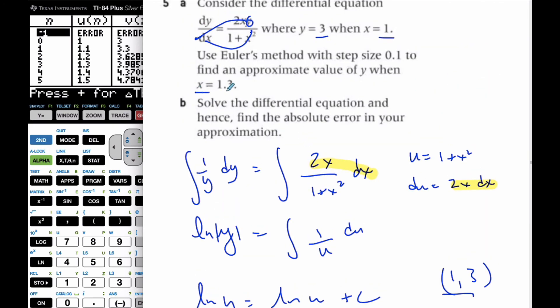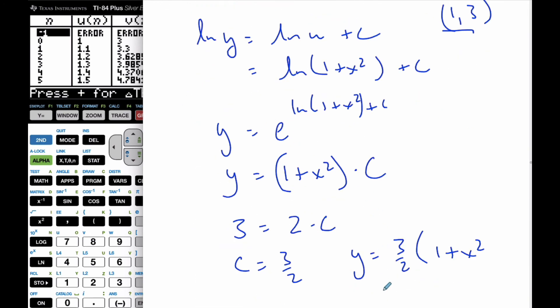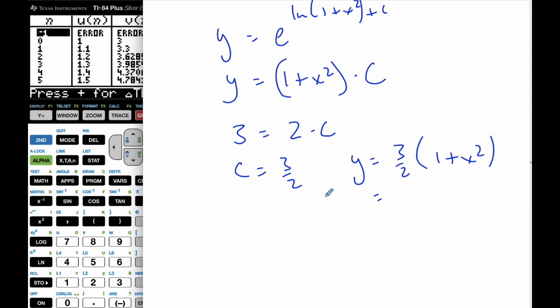And I'm looking to find a value at 1.3. So if I'm going to find y at 1.3, I get 3 halves times (1 plus 1.3 squared).